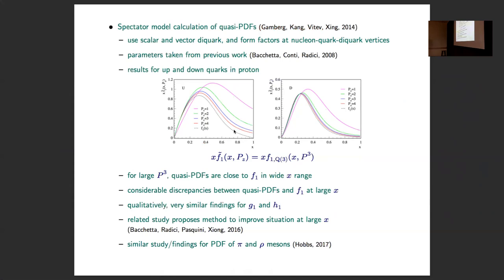There is also a calculation by Hobbs, also in the spectator-type model, for pions and rho mesons — the PDFs showing issues toward the endpoint. One question: in QCD, corrections involve higher twist and direction terms for remote correlations. Here in the model it's basically kinematical effects only, so it's much more primitive in that regard.